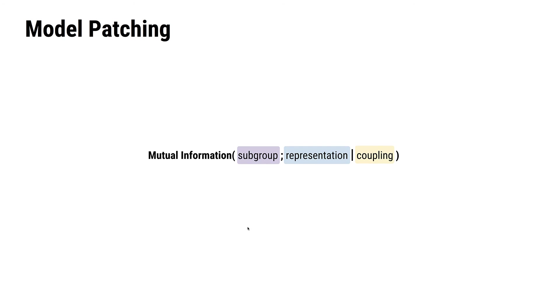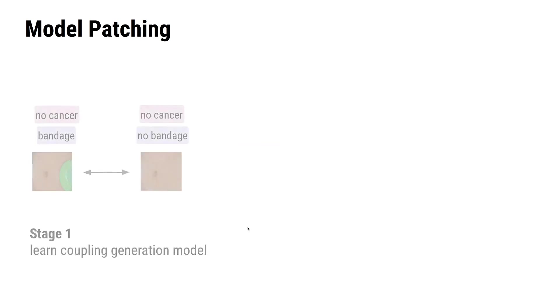Model patching is a two-stage framework that provably optimizes an upper bound on this new mutual information objective. In its first stage, we learn a generative model that can imagine what an example would look like if it belonged to a different subgroup.